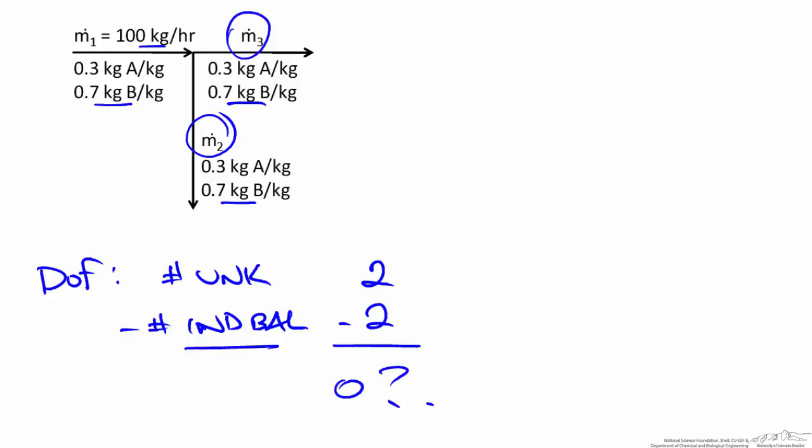But we intuitively know that can't be right. There is an infinite number of ways that 100 kg per hour can be split amongst M2 and M3. So why is our degrees of freedom analysis inconsistent with what we intuitively know about our system?